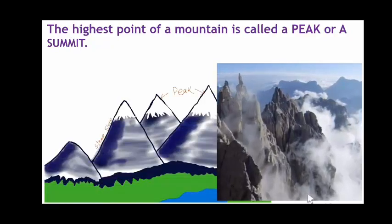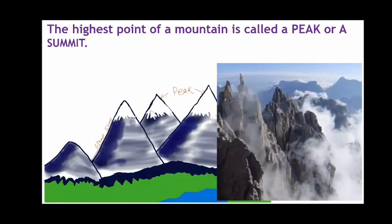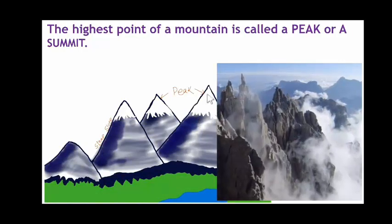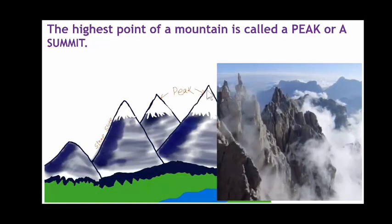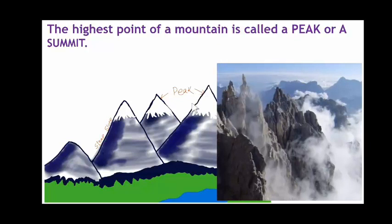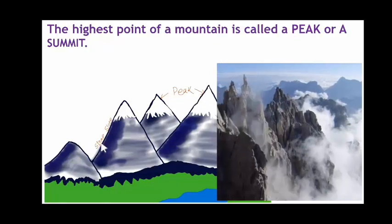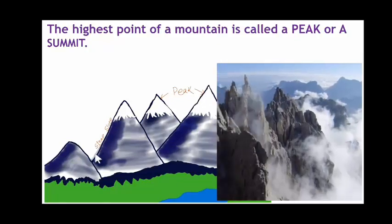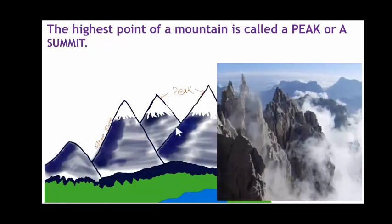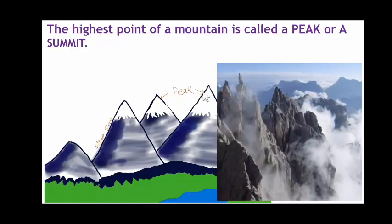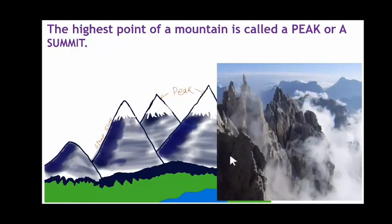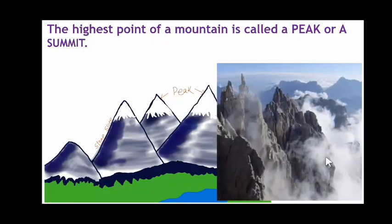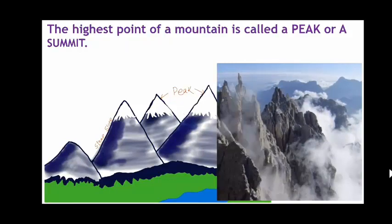Through this diagram you can see that mountains have a conical peak and steep slopes. These are known as the steep slopes and these are known as the peaks. So we can say that mountains have peaks and steep slopes.